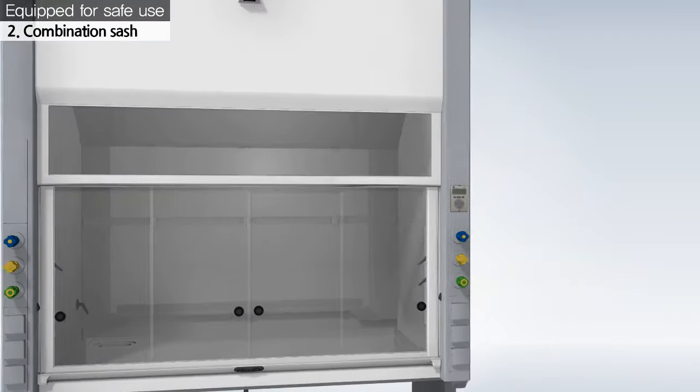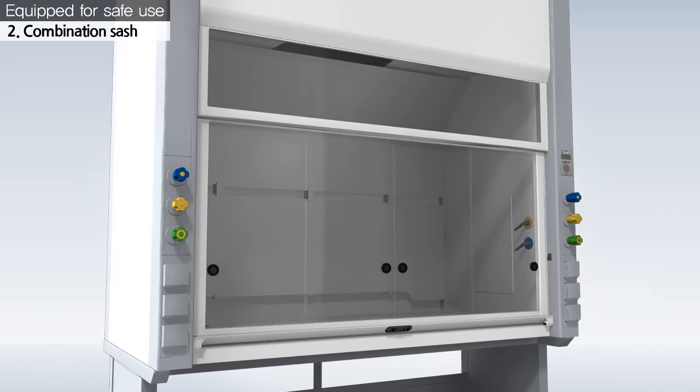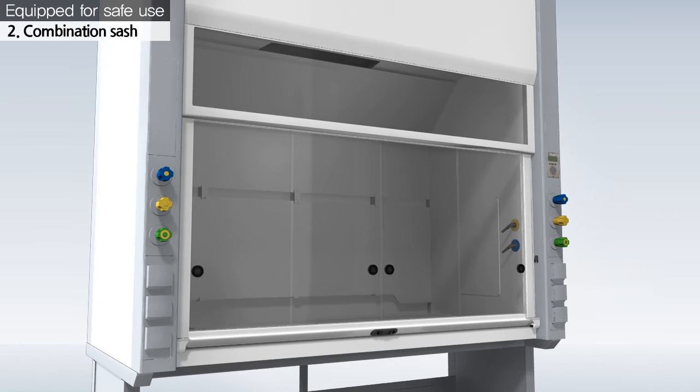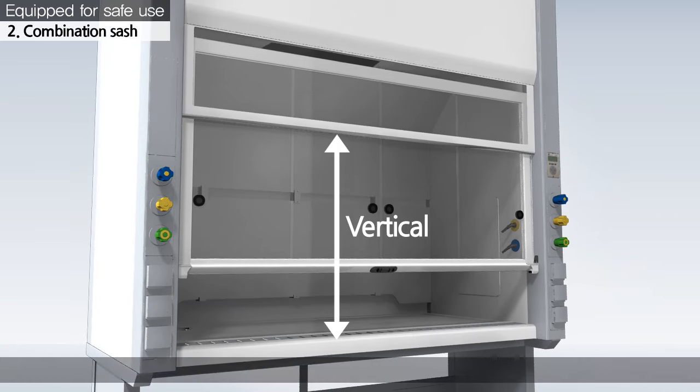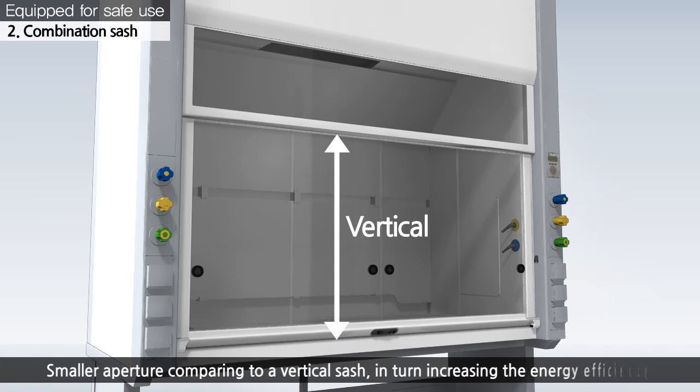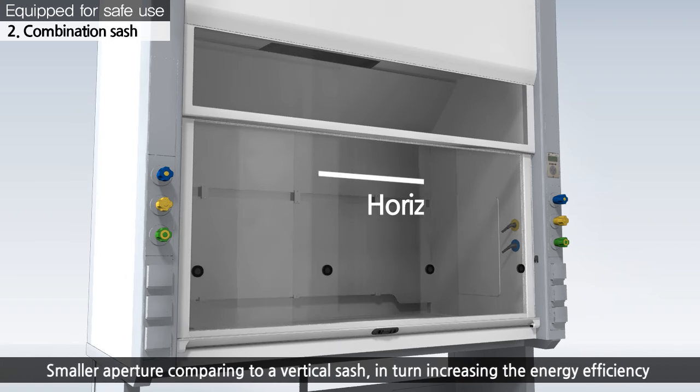The front door is designed with a hybrid sash structure to enable its opening in both vertical and horizontal directions. Compared to a vertical sash, a hybrid sash has a smaller aperture of a door.